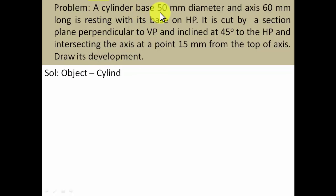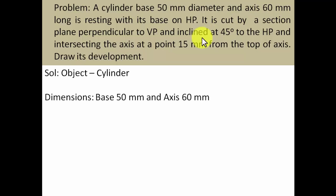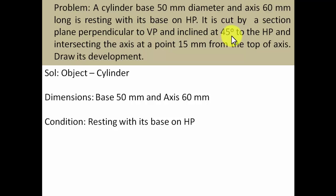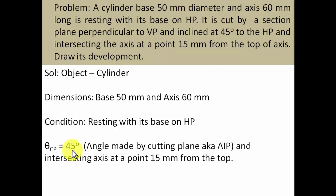The object is a cylinder — base diameter is 50 mm and axis is 60 mm long. It is resting with its base on HP. The cutting plane is perpendicular to VP and inclined to HP, which means this cutting plane is an AIP — auxiliary inclined plane. Since it is inclined to HP at an angle of 45 degrees, theta CP cutting plane equals 45 degrees.